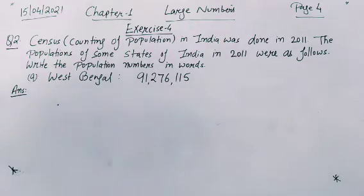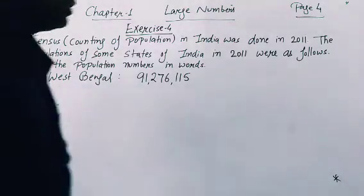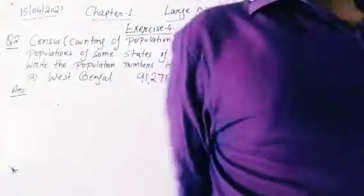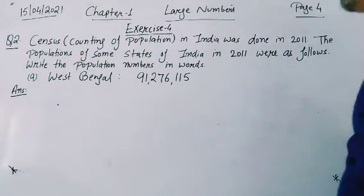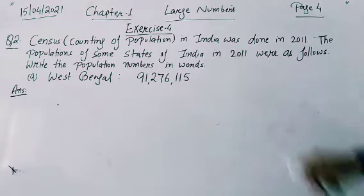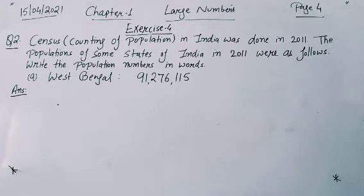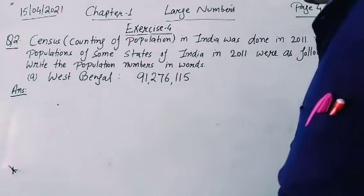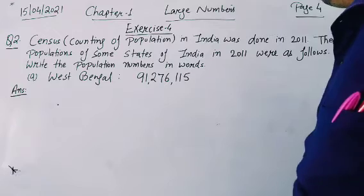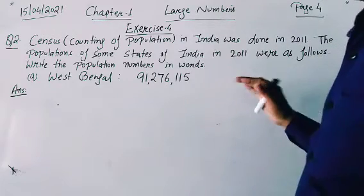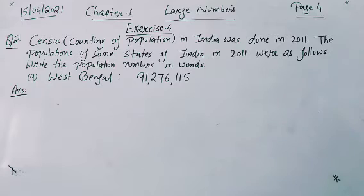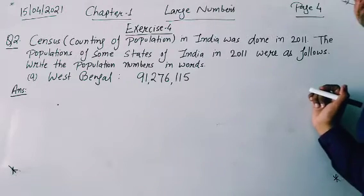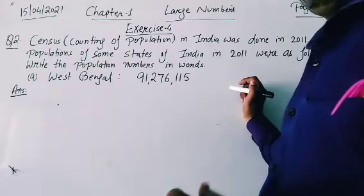Now students, see question number 2. Question number 2 is about the census — the counting of population. The census in India was done in 2011. The populations of some states of India in 2011 were as follows. You have to write the population numbers in words. There are 4 parts: A, B, C, D. I will start from part A.